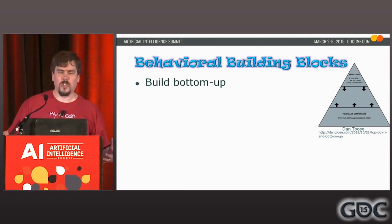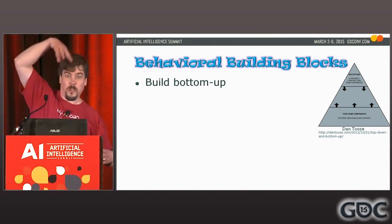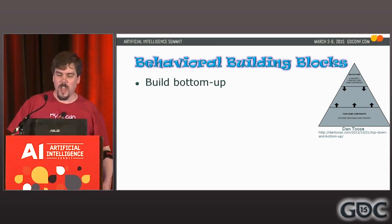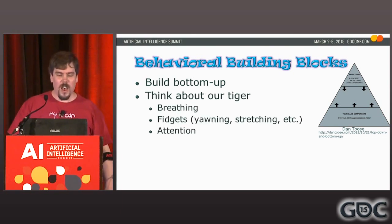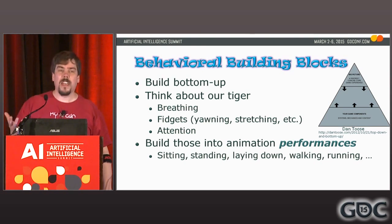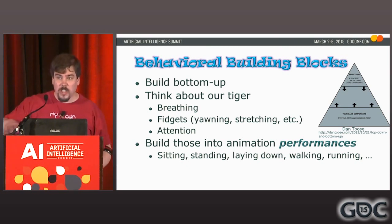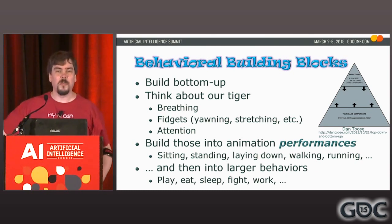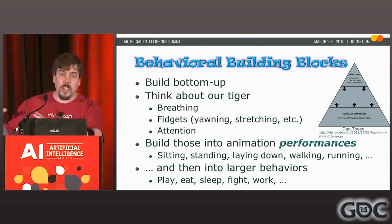When building AI I like to build bottom-up: start with small pieces of behavior and build them up into larger systems. For the tiger, start with the little stuff — breathing, fidgets, yawning, stretching, tail motions, flank twitches. Get the attention right, get the character looking around. Then build performances: sitting, standing, laying, walking, running — with as many knobs as possible. I don't just want a walking animation; I want the character walking when tired, sad, or excited. Those knobs build up into larger behaviors: eating, sleeping, fighting, whatever the game requires.